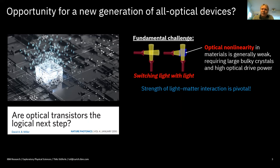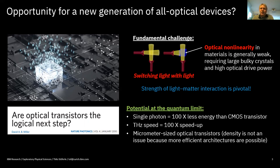The strength of light-matter interaction is pivotal. If successful in building an optical transistor, the fundamental limits include the possibility of using a single photon to operate the transistor — about 100 times less energy than a current CMOS transistor — and using terahertz speed, corresponding to about 100x speedup. A downside critics always raise is that with optics you will never reach electronic density, limited to perhaps micrometer-scale devices. Going to plasmonics makes them smaller but introduces losses.